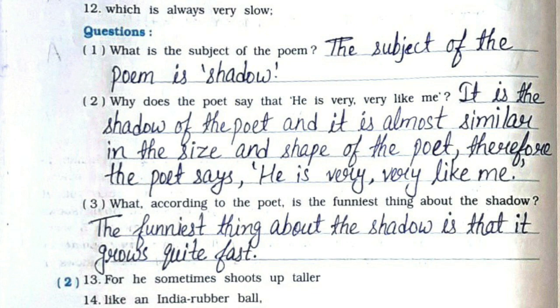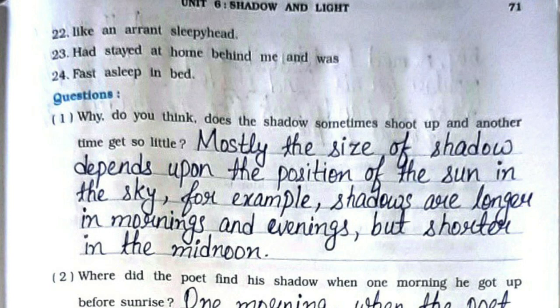First question: What is the subject of the poem? The subject of the poem is shadow. Second: Why does the poet say that he is very very like me? It is the shadow of the poet and it is almost similar in the size and shape of the poet, therefore the poet says he is very very like me.